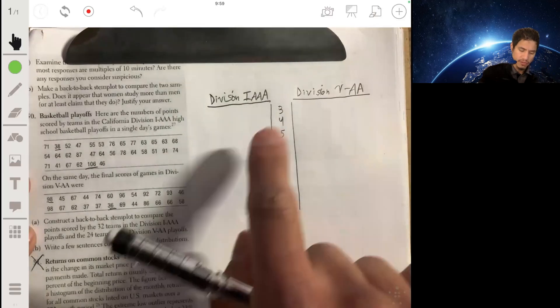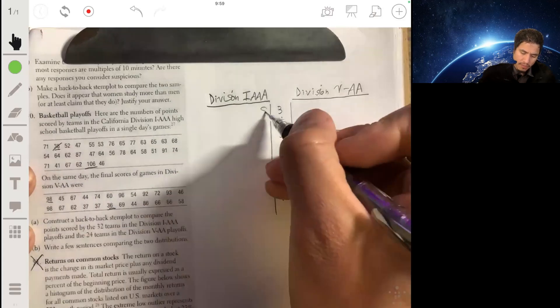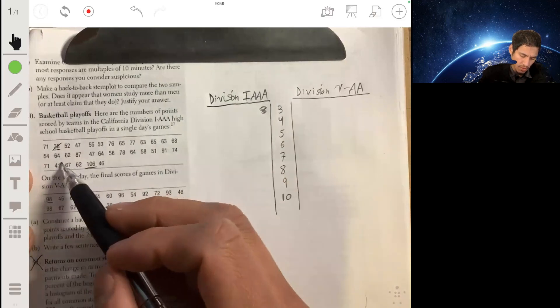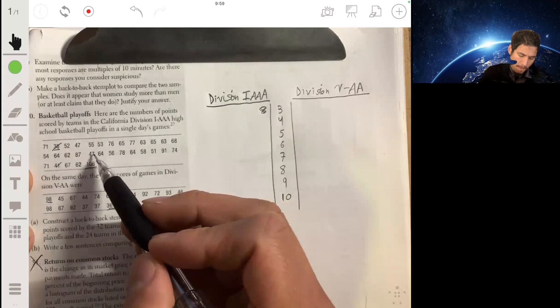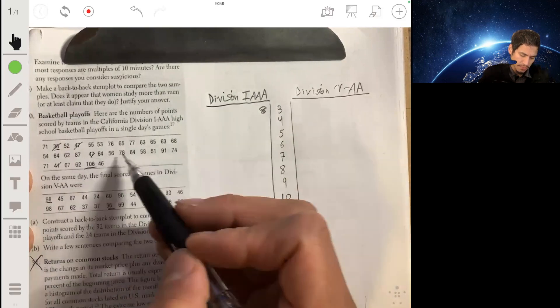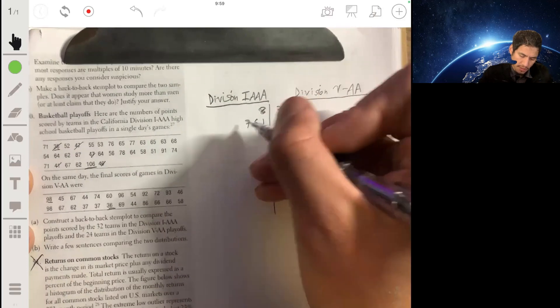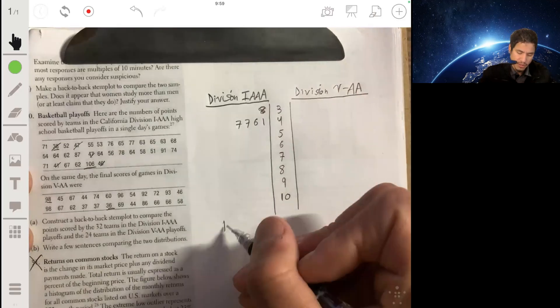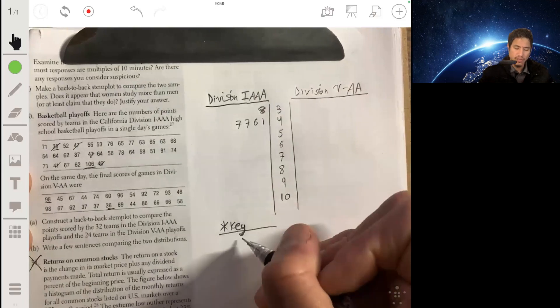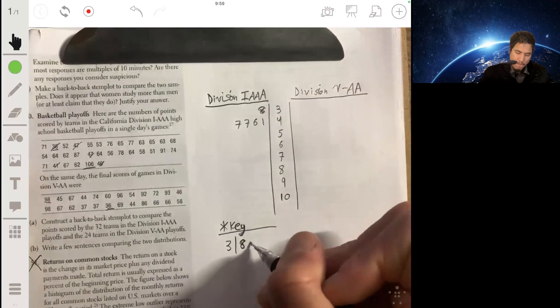Okay, so going from lowest to highest, we have 38, so we're going to put 8. Then we're going to get the 40s: 41, 46, 47, 47. We should make a key while we're at it. It's always important that anybody who looks at this knows how to read it. So 3 slash 8 means 38 points.